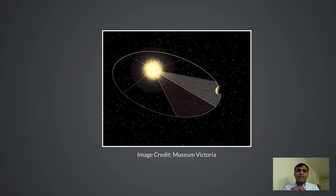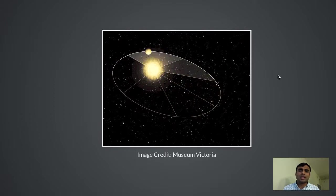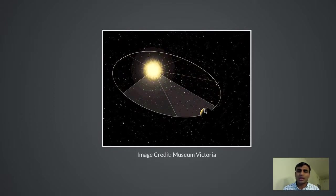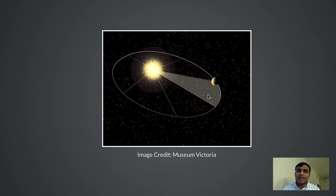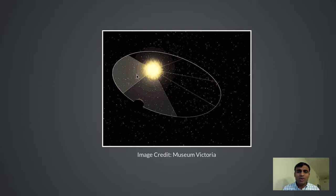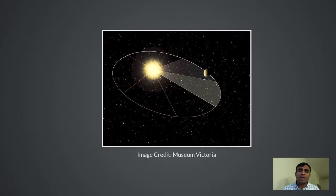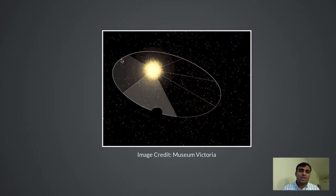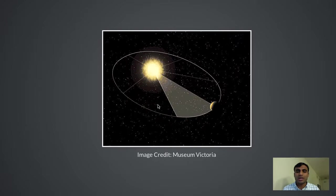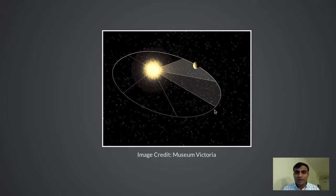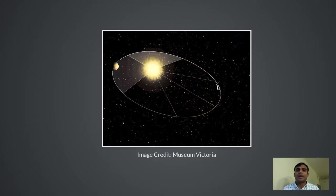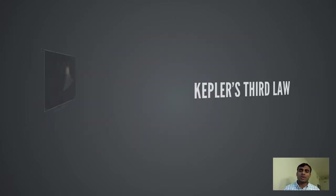In 3D, this looks like planet Mars going around the sun, and the area it sweeps out in equal time intervals is equal. So when it is closer to the sun it has to move faster, and when it is farther away it moves slightly slower.